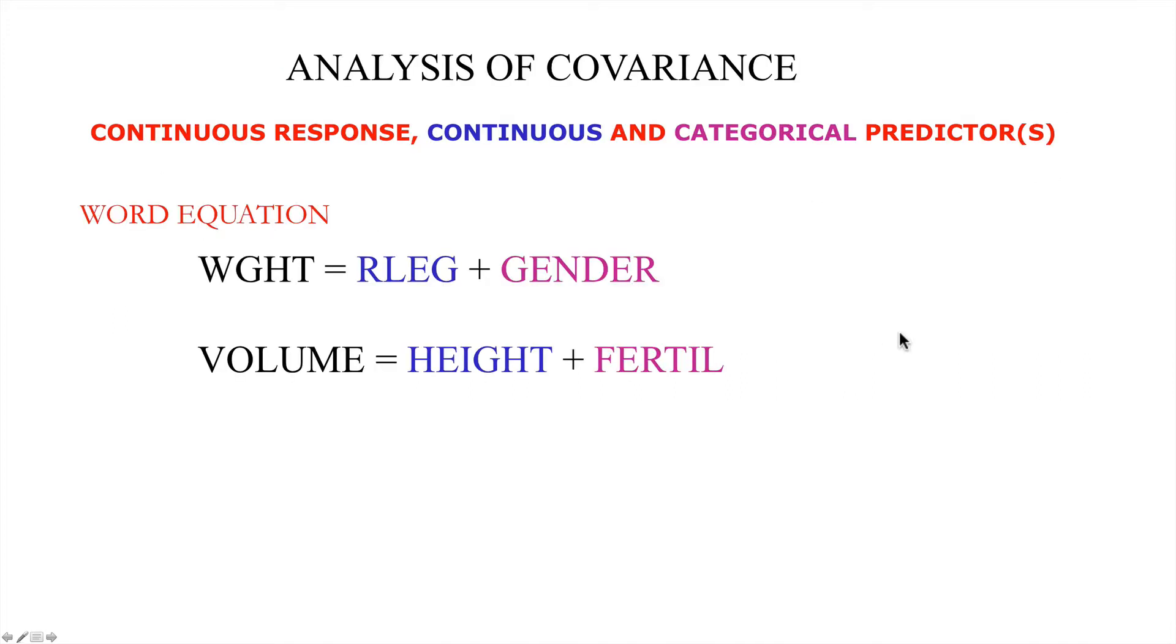In words we can have for example a continuous response like weight being related to the size of a continuous predictor like the size of one's right leg and a categorical predictor for example one's gender. Or the volume of a tree might be related to the height of that tree which is continuous and the type of fertilizer it's received as it's been growing.